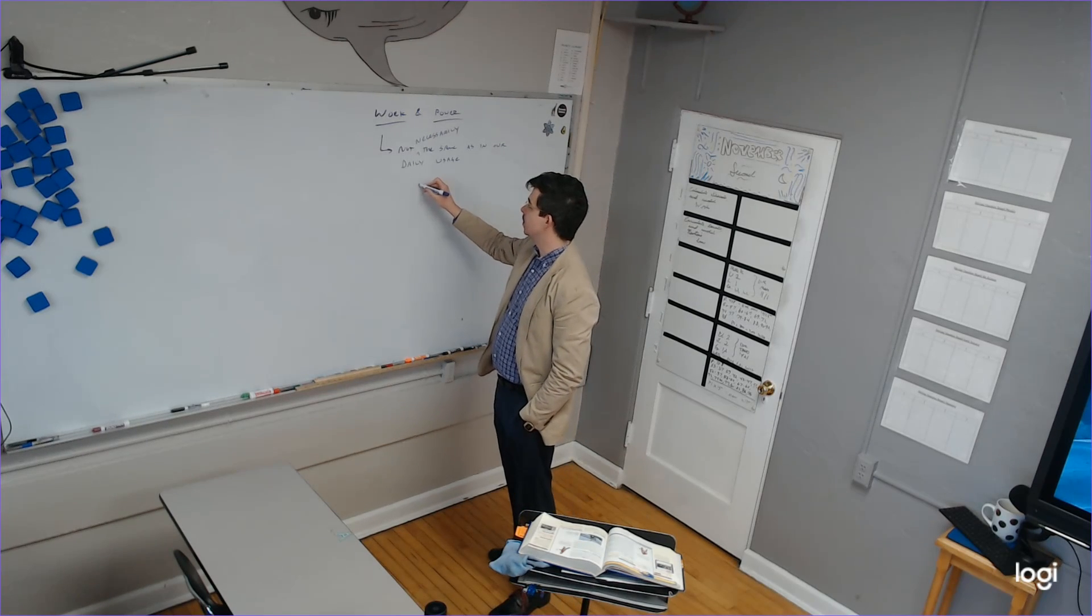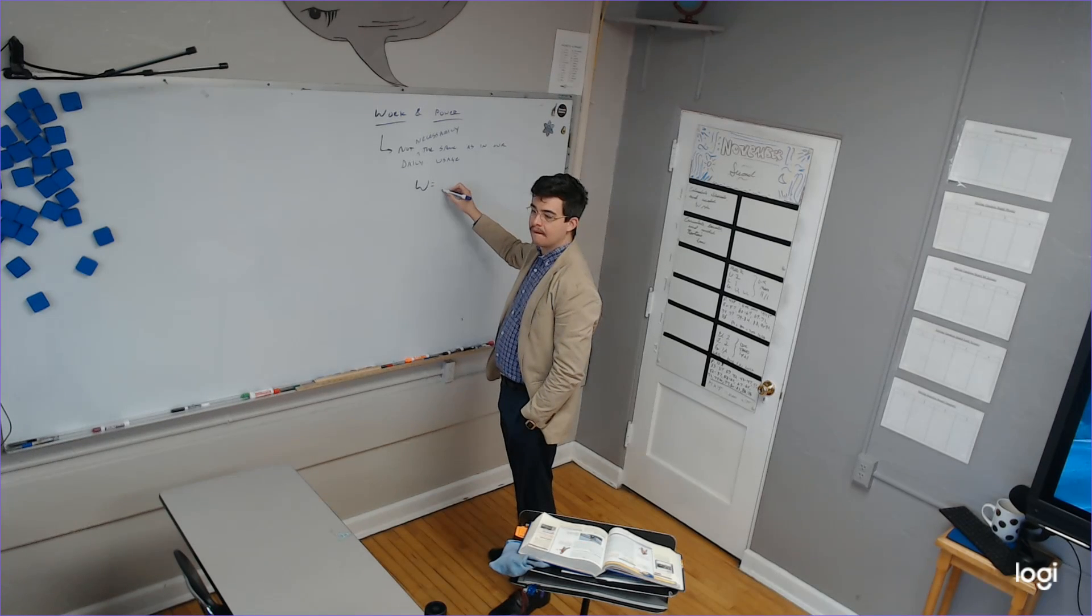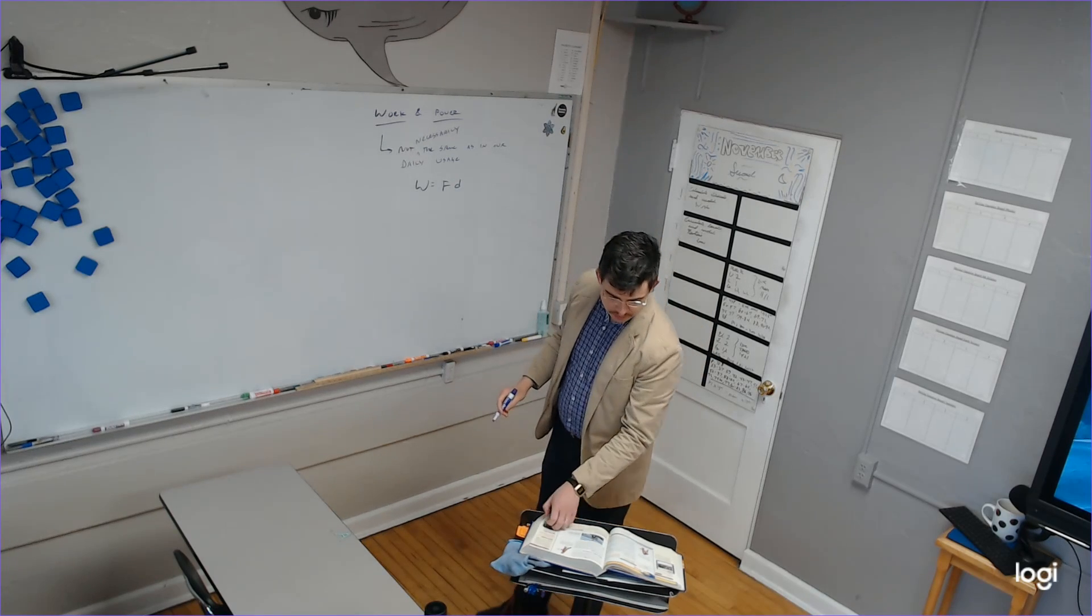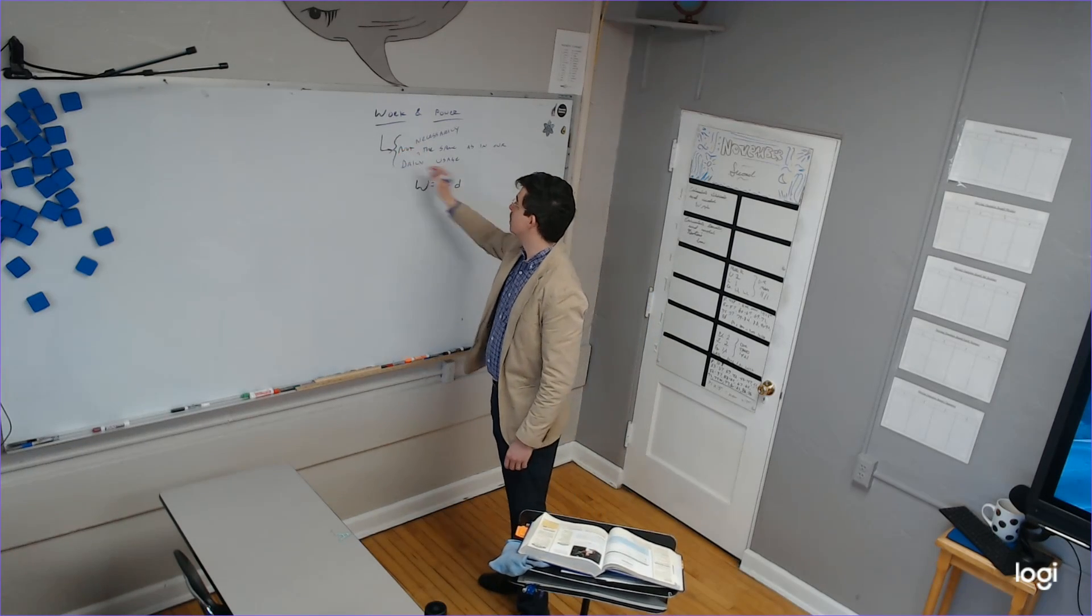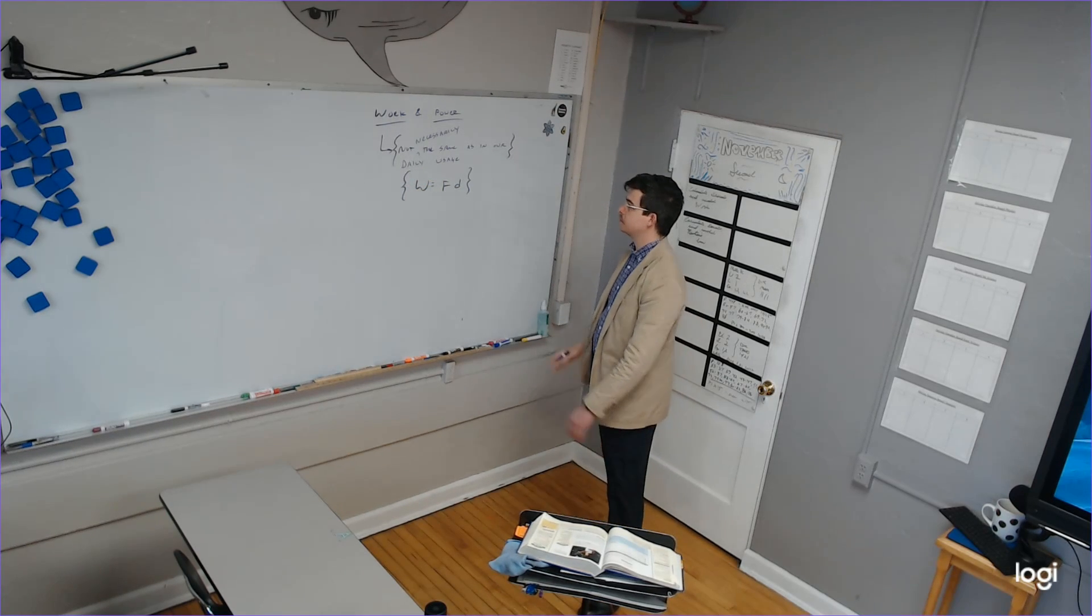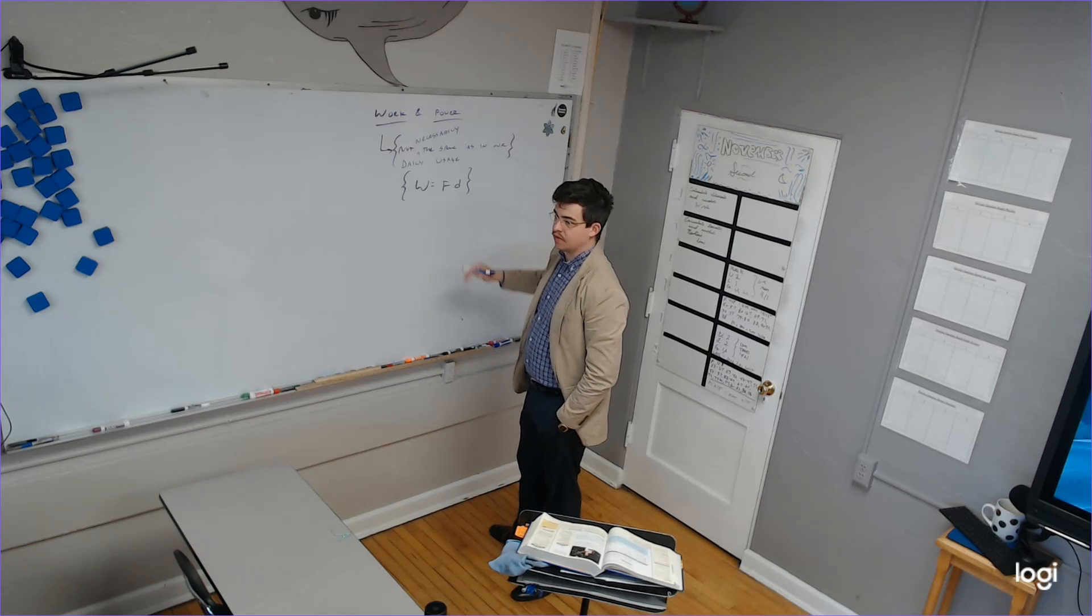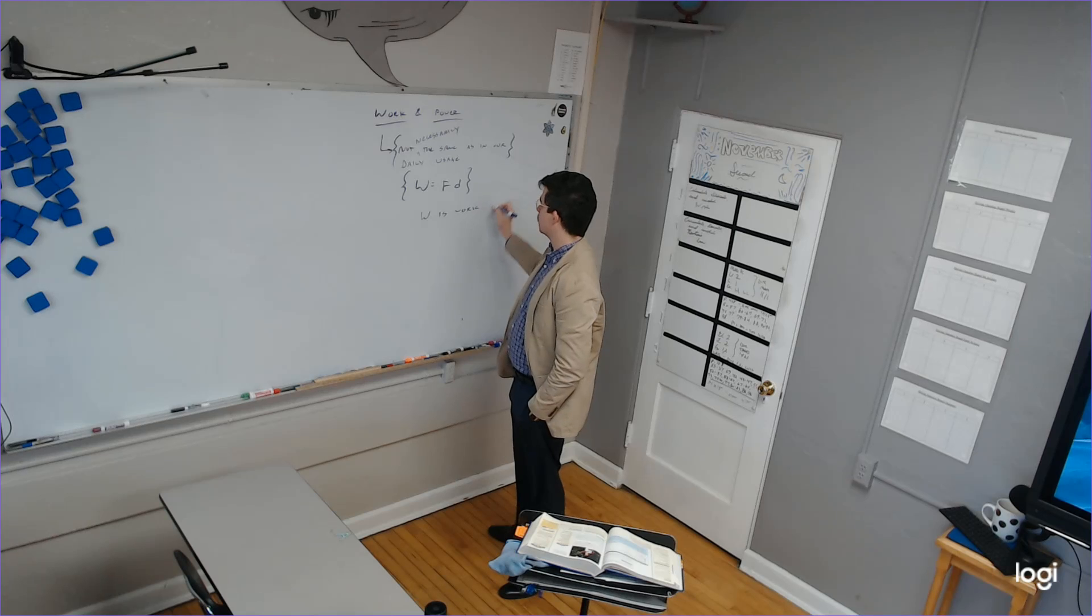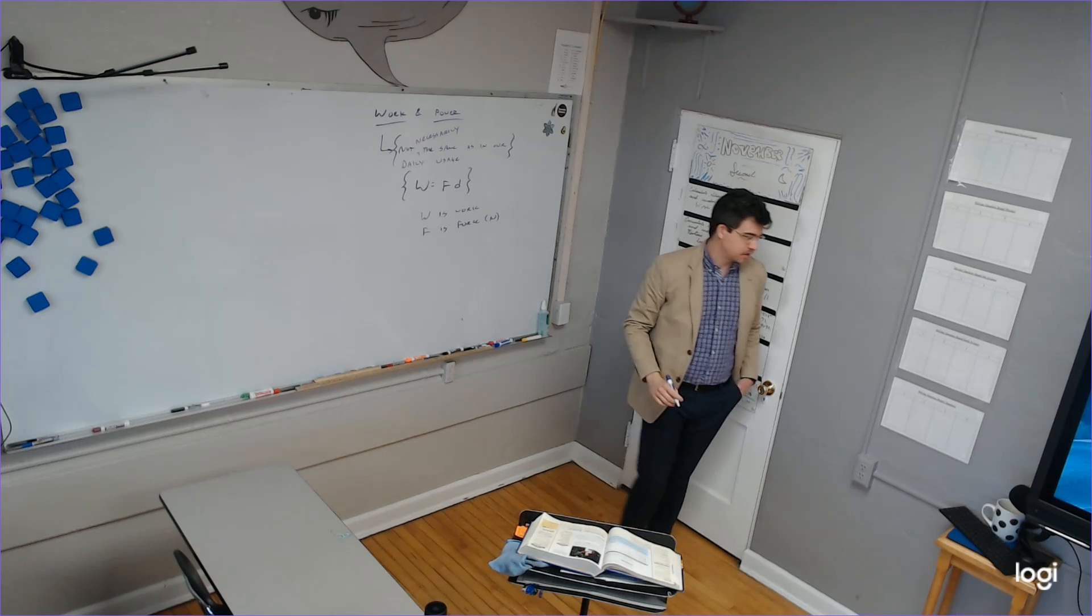So what is then, if it's not the same as in our daily usage, what is it? We already know the equation because of our lab. What is the equation that we use? W equals F times d. So we usually just put it like this. This is how your book expresses it. We do need to be careful because there's something besides the difference between our definition and the physics definition.